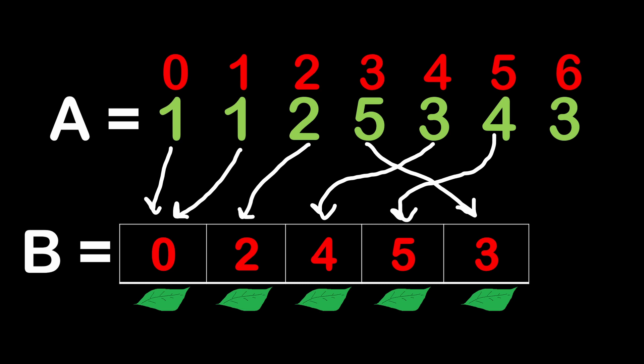At this stage our solution is almost finished. We run through array B and check two conditions. First, if any element equals minus one, we return minus one immediately because there is an empty position the frog cannot jump over. Second, we find the maximum value in B, because that is the latest time at which all positions were filled. If the function never returned minus one, at the end of the loop we return the maximum value found, which in this example is five.